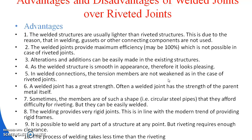A welded joint has great strength — often the strength of the parent metal itself. Sometimes members are of such a shape that they present difficulty for riveting, but they can be easily welded. Welding provides very rigid joints, in line with the modern trend of providing rigid frames. It is possible to weld any part of a structure at any point, but riveting requires enough clearance.